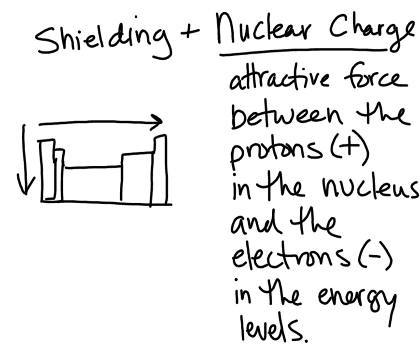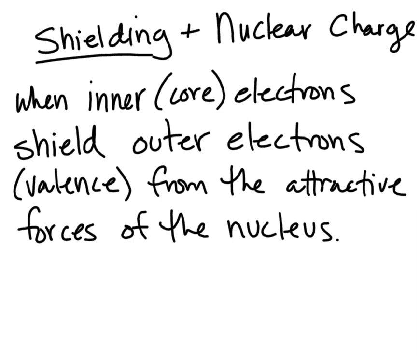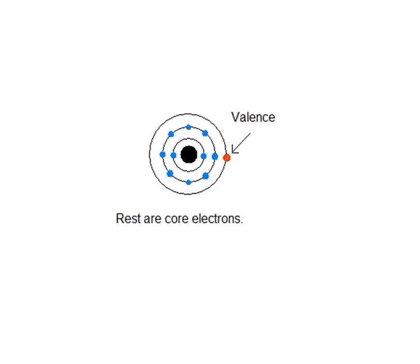This nuclear charge is the driving force behind shielding. Shielding is when you have the inner electrons, or the core electrons — they shield the outer electrons, or the valence electrons, from the attractive forces of the nucleus. So here I have this one red valence electron right here, that's in the outermost energy level.